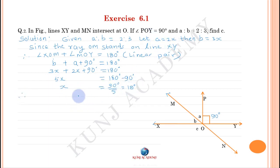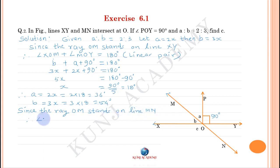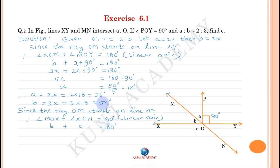Therefore x equals 18. A equals 2x equals 2 into 18 equals 36 degrees, and B equals 3x equals 3 into 18 equals 54 degrees. Since ray OX stands on line MN, therefore angle MOX plus angle XON equals 180 degrees (linear pair). B equals 54 degrees, therefore C equals 126 degrees.